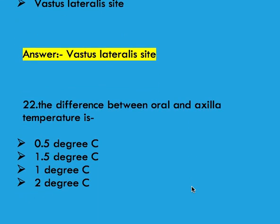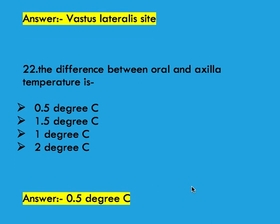Next question: the difference between oral and axilla temperature is options 0.5 degree centigrade, 1.5 degree centigrade, 1 degree centigrade, and 2 degree centigrade. Right answer is 0.5 degree centigrade.